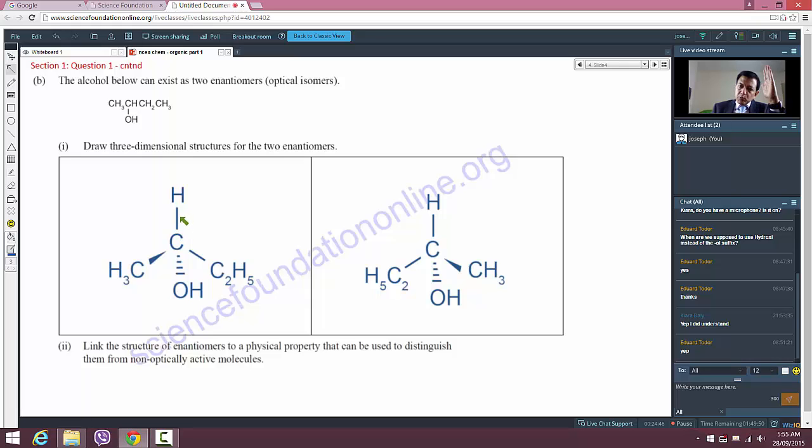You have a carbon atom with the H atom going upwards in the plane of the page, a C2H5 or ethyl group also in the plane of the page, a methyl group sticking out of the paper, and a hydroxy group going backwards behind the paper. Now think you have a mirror here between the two. We draw its mirror reflection - the carbon atom at the center, the H at the top there.